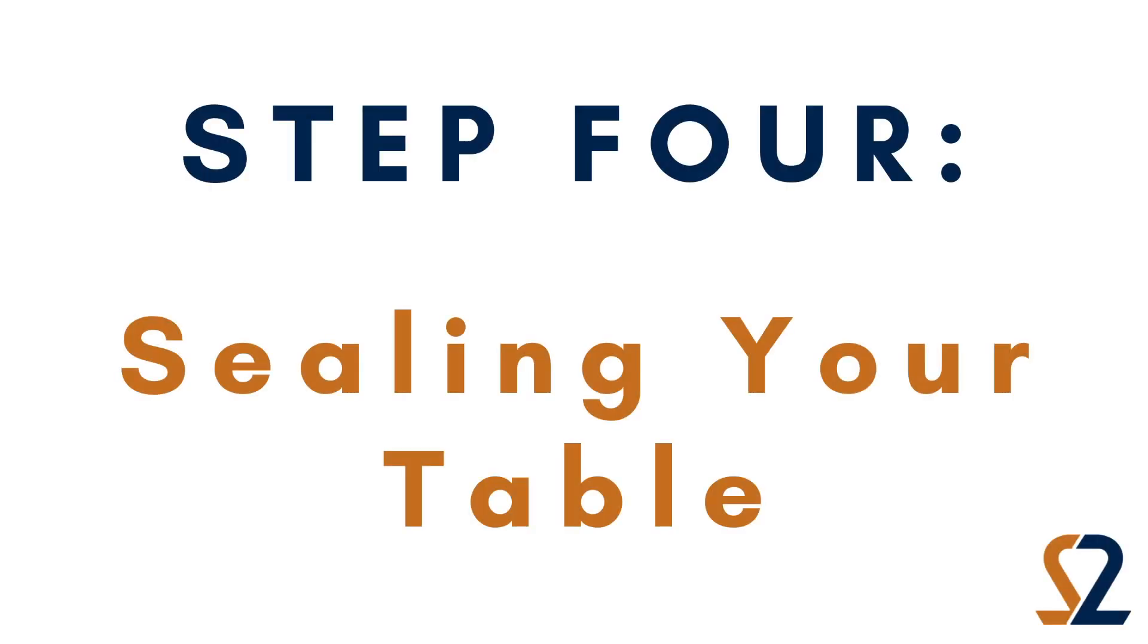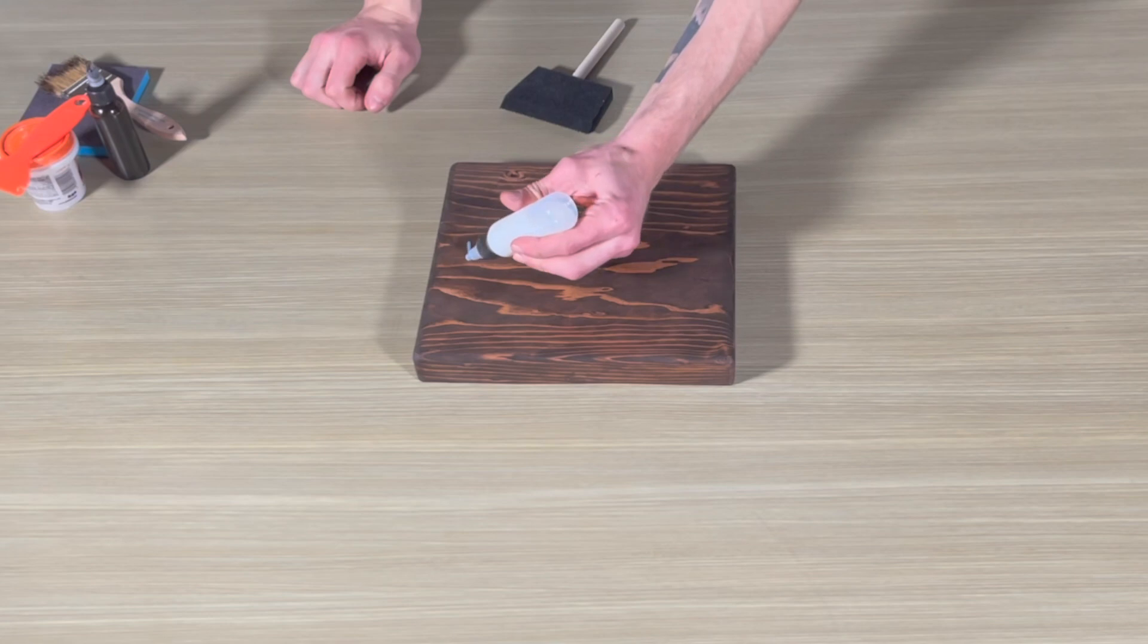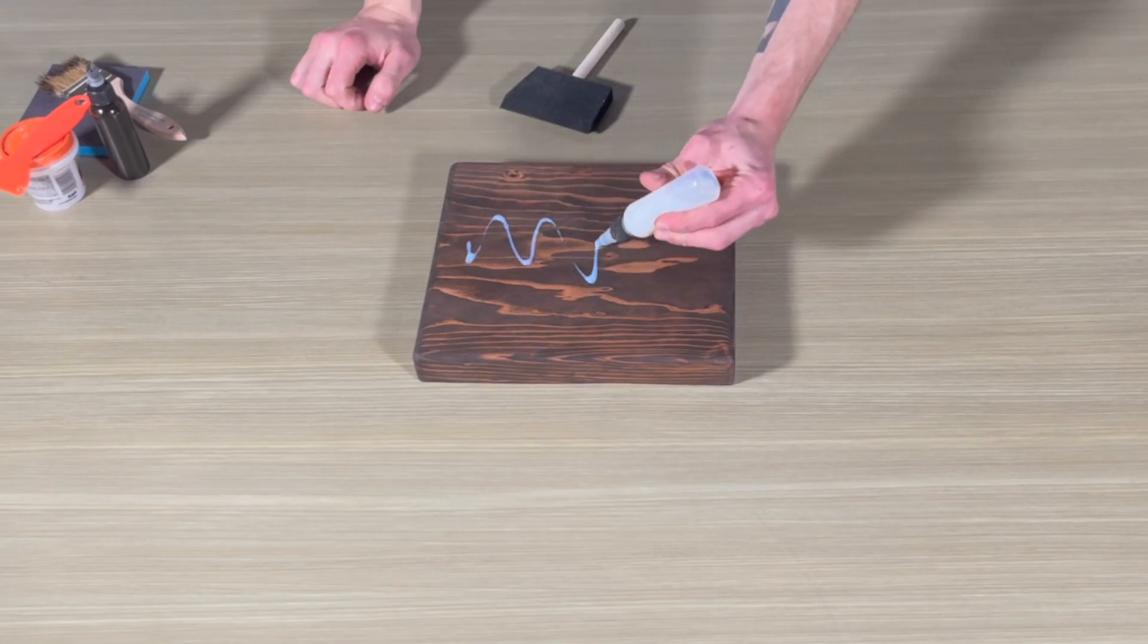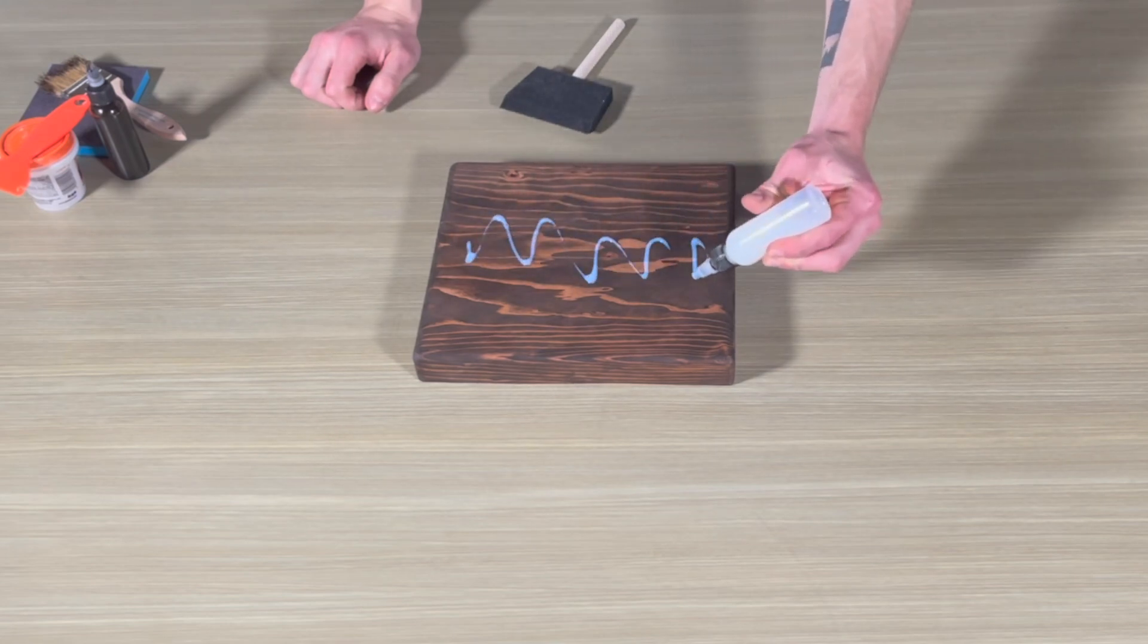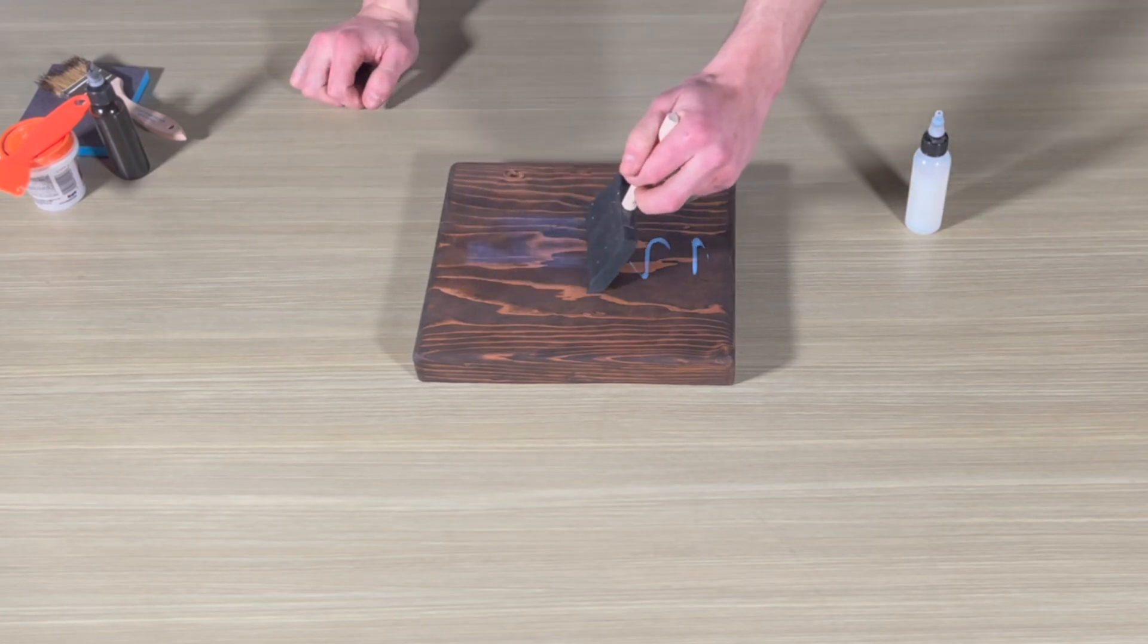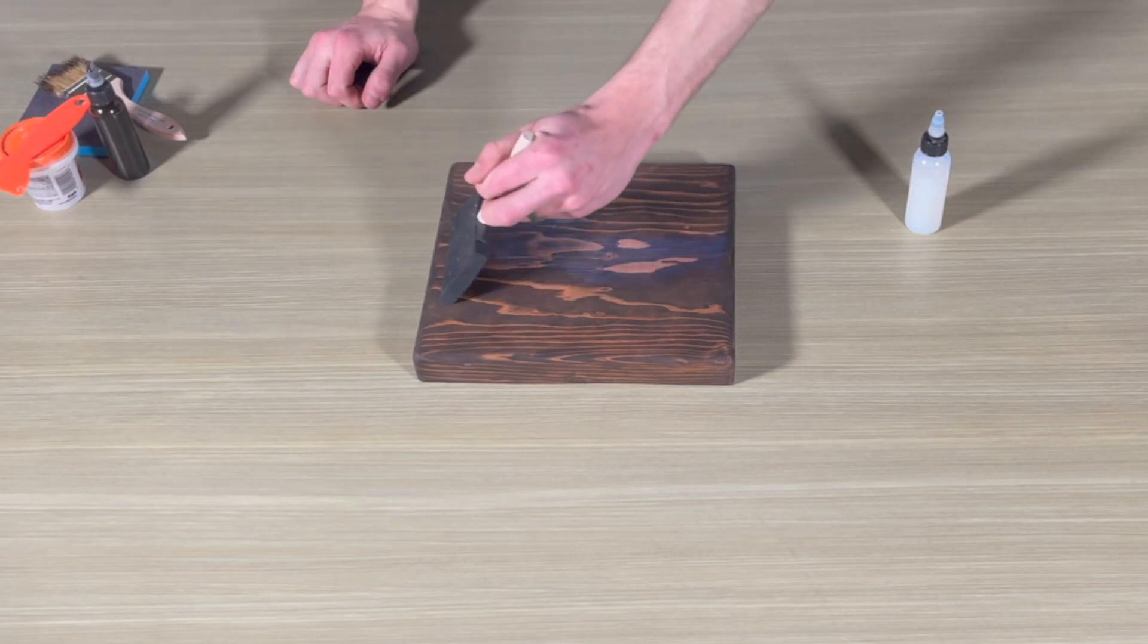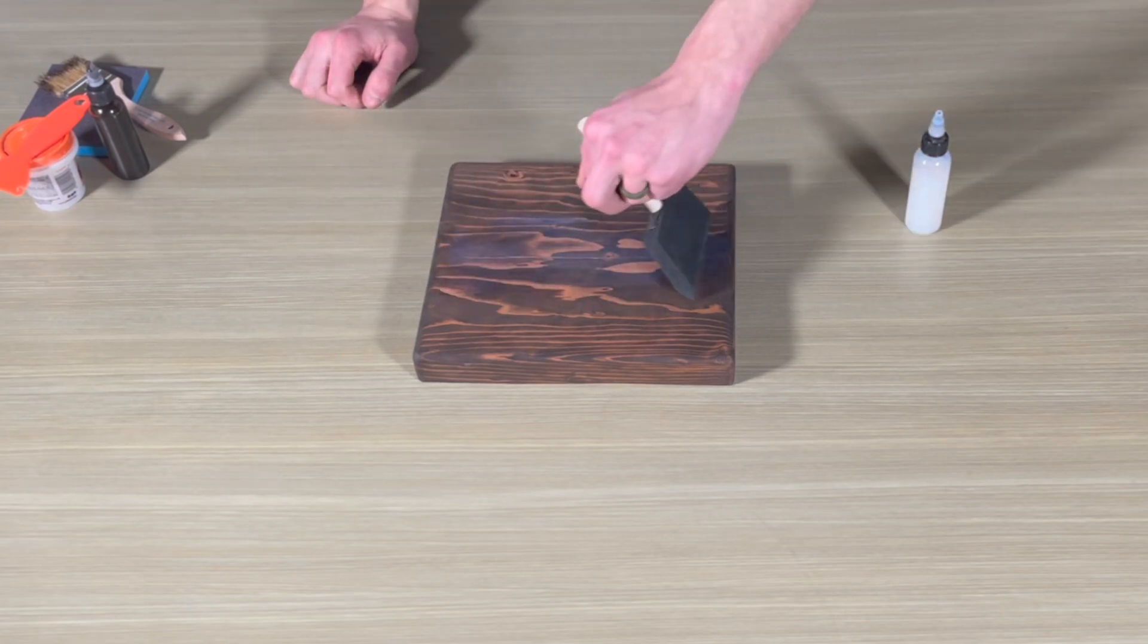Step 4. Sealing your table. Finally, take your polyurethane and foam brush. Pour your polyurethane on your table where the crack or knot you repaired is. With your foam brush, spread the polyurethane around until it covers the repaired area. Brush in the direction the grain is going.